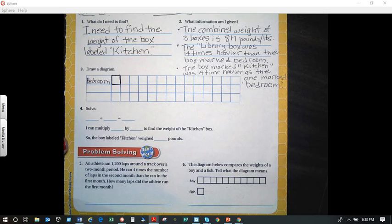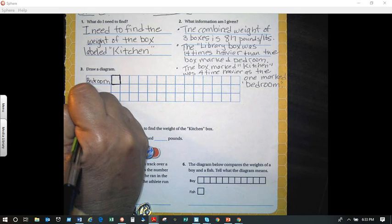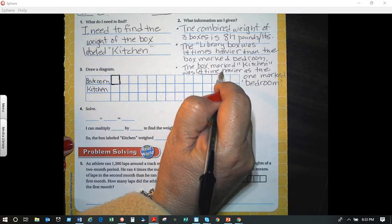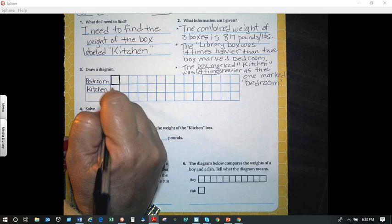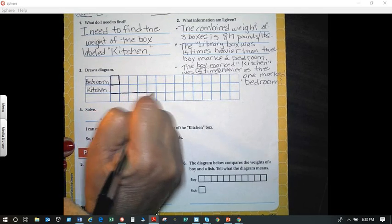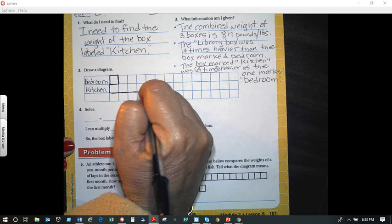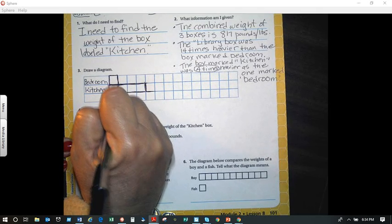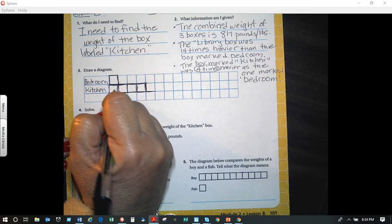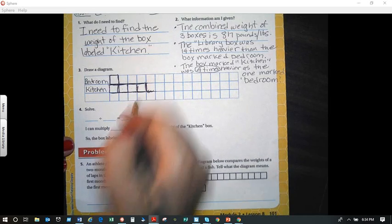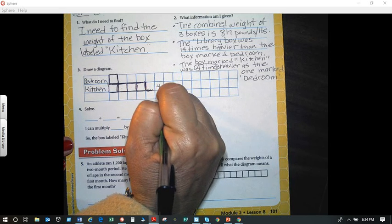Then it says that I have the kitchen, right? And so the kitchen is 4 times. So how many boxes am I going to highlight? That's right, because the kitchen is 4 times heavier as the bedroom. So I'm going to do 1 box, 2 box, 3 box, 4 box. Got a little carried away. So I have 1 box, 2 box, 3 box, 4 box. So that is 4 times heavier.